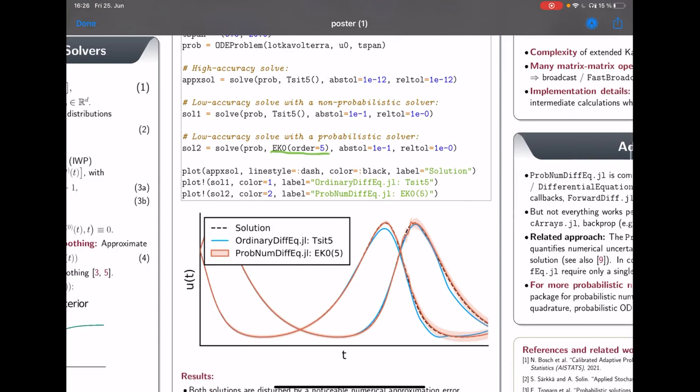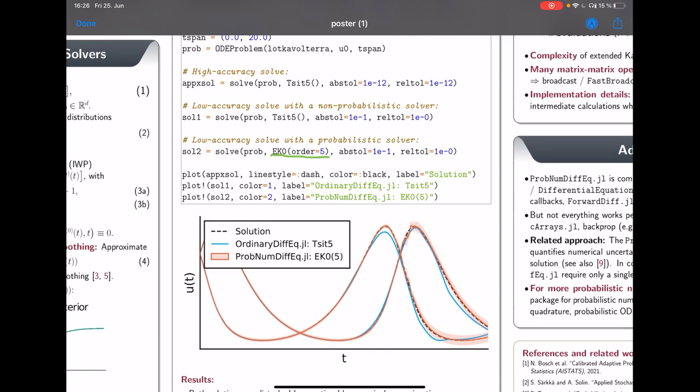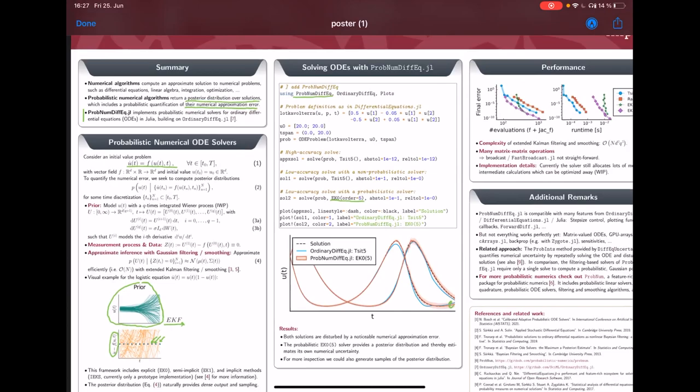If you solve ODEs in this case for very low accuracy settings you see the difference between a non-probabilistic and a probabilistic solver because the blue line provided by the non-probabilistic Tsit5 method shows a numerical error but you only get a single line whereas the orange result provided by ProbNumDiffEq is really a random process. So this is a posterior distribution with mean and covariance and the shaded area showing the uncertainty so the standard deviation should quantify the numerical approximation error.